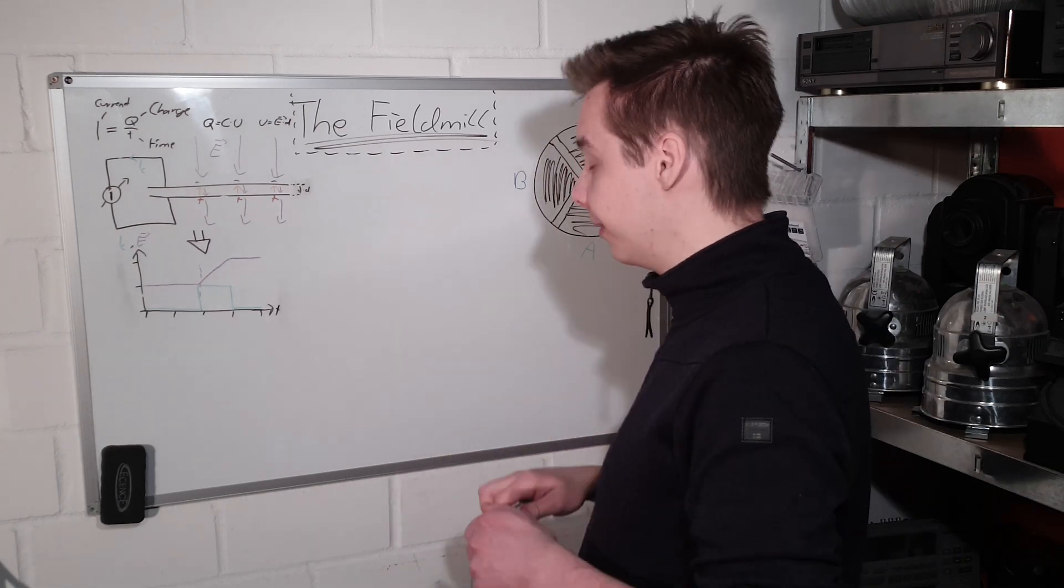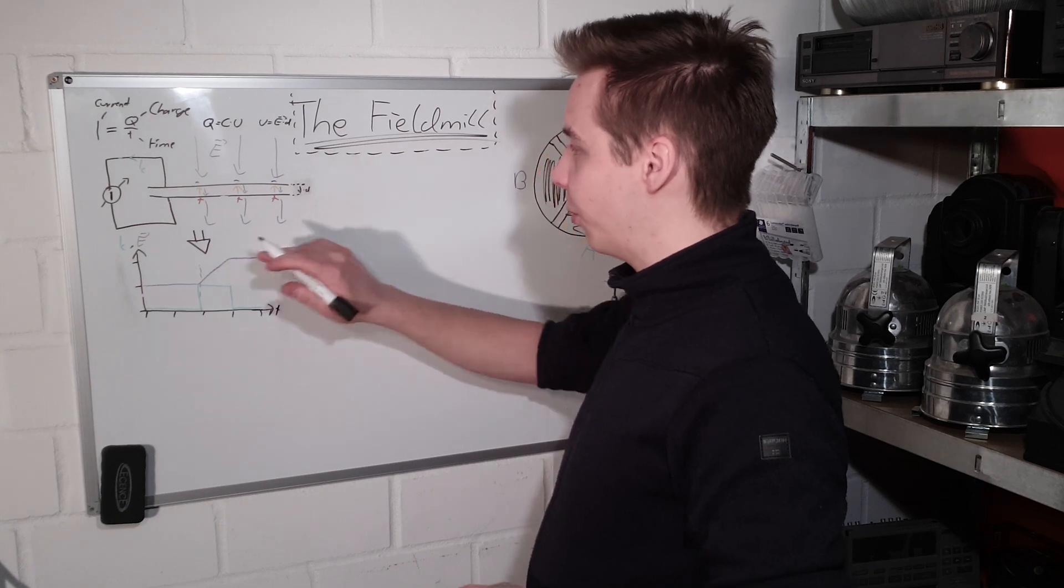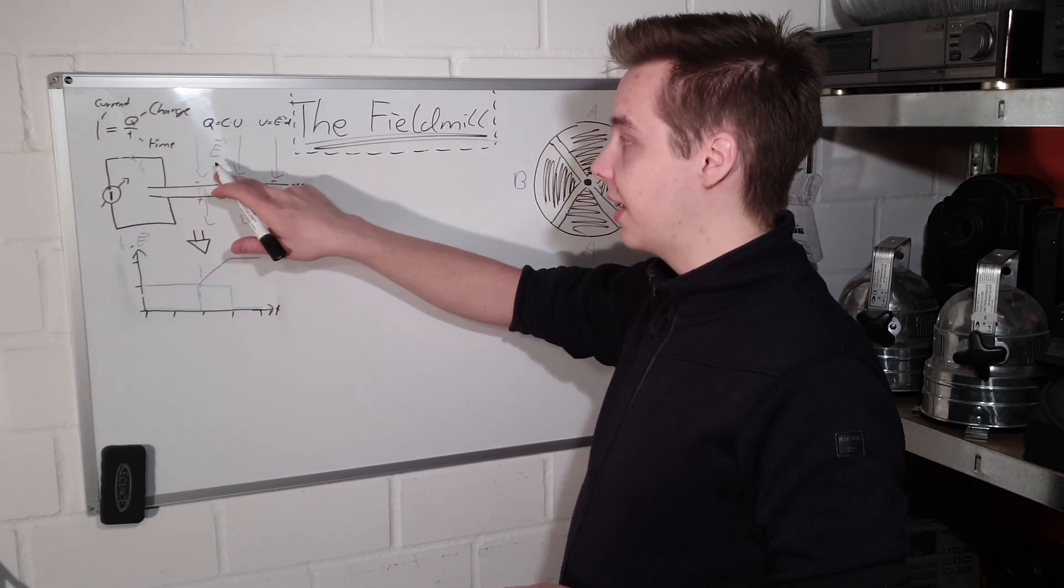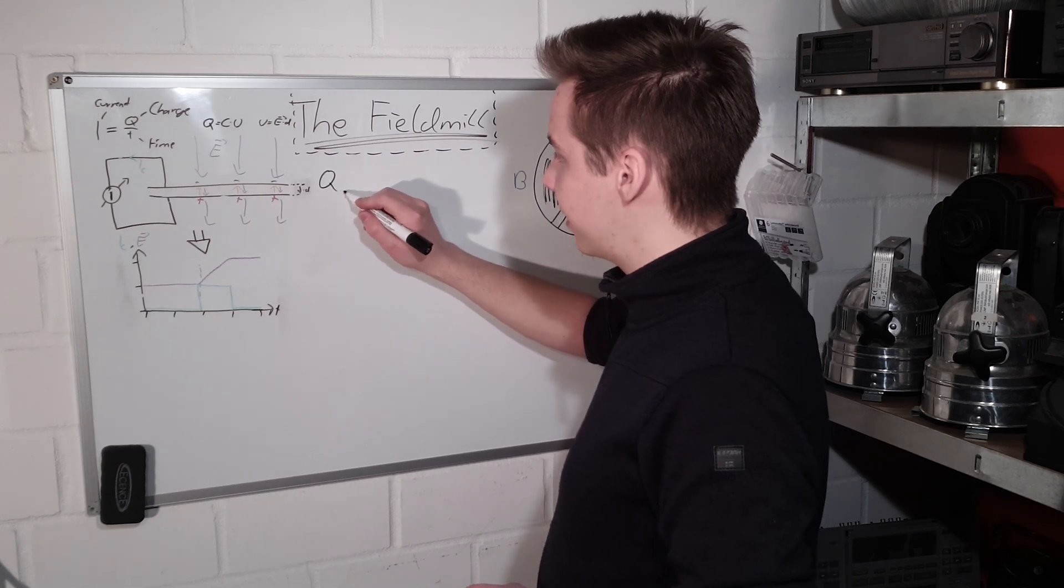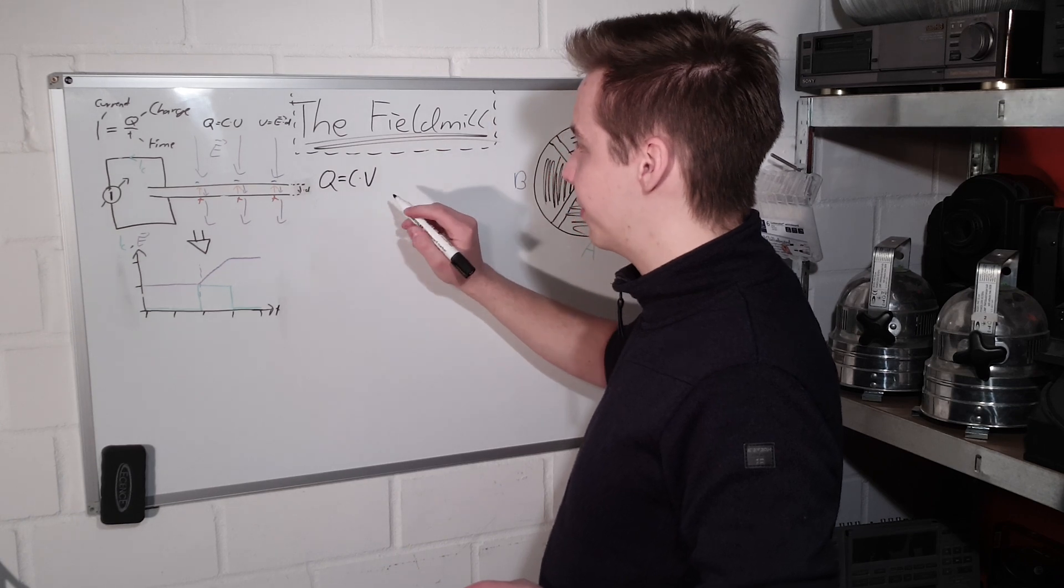Now, how high is that current? Well, let's calculate it. It's fairly simple. We should first of all look at the amount of charge that actually moves from one plate to the other, which is quite simple. We could just take that out of the capacitor equation, Q is C times V.